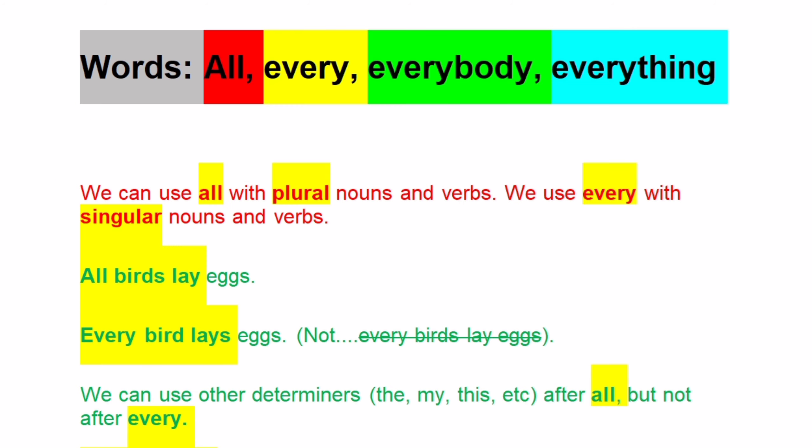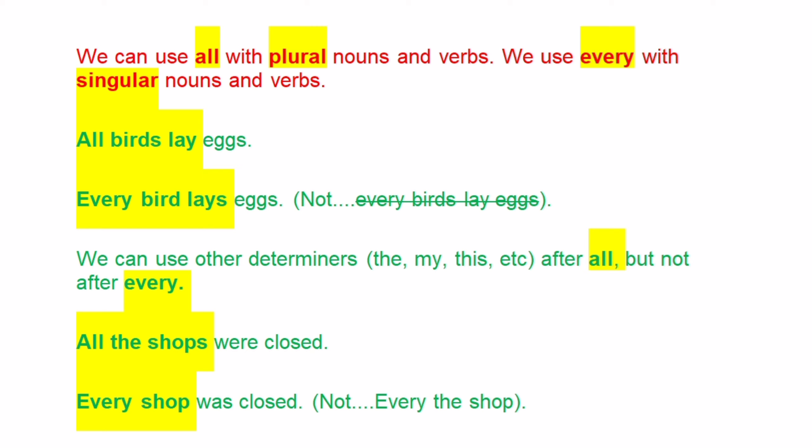We can use 'all' with plural nouns and verbs. We use 'every' with singular nouns and verbs: 'All birds lay eggs' — 'Every bird lays eggs' — but NOT 'Every birds lay eggs.' We can use other determiners — the, my, this, etc. — after 'all,' but not after 'every': 'All the shops were closed' — 'Every shop was closed' — but NOT 'Every the shop.'